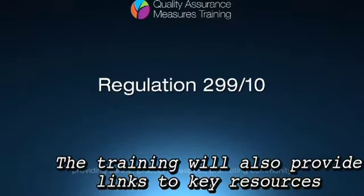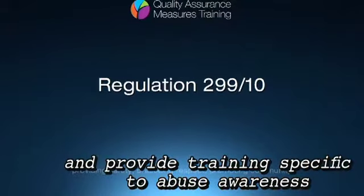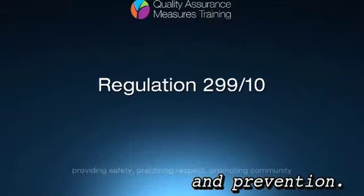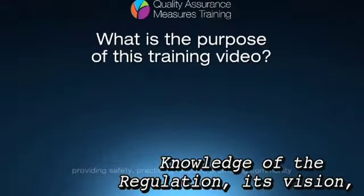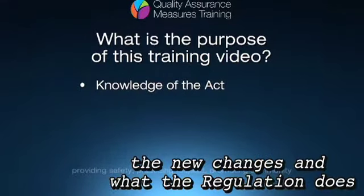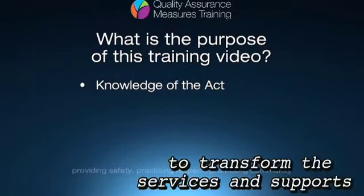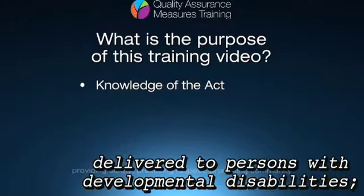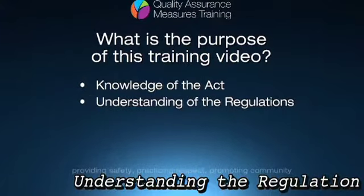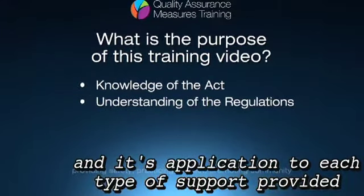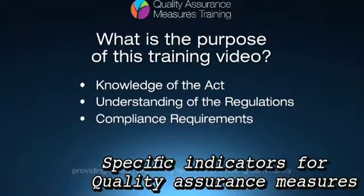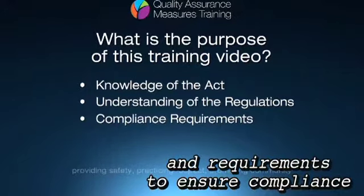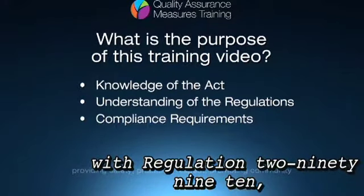The training will also provide links to key resources and provide training specific to abuse awareness and prevention. We will be covering a broad range of topics which include knowledge of the Regulation, its vision, the new changes and what the Regulation does to transform the services and supports delivered to persons with developmental disabilities, as well as understanding the Regulation and its application to each type of support provided. Specific indicators for quality assurance measures and requirements to ensure compliance with Regulation 299-10.